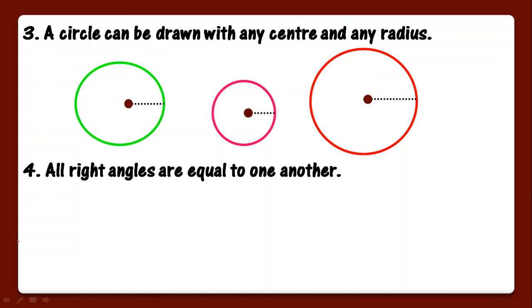Now our fourth postulate is all right angles are equal to one another. All right angles are definitely equal to each other because a right angle equals 90 degrees. If we talk about a right angle triangle, here the angle is 90 degrees. This is the right angle. All four angles are right angles and they are equal to 90 degrees. So basically all right angles are equal to one another.